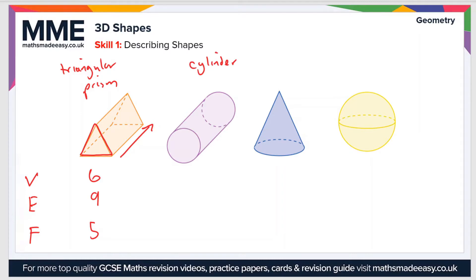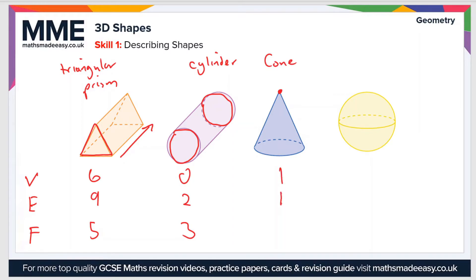Next we have a cylinder — you can think of it as a circular prism. There are no vertices, there are two edges where the front and back faces meet the curved face, and there are three faces. Then we have a cone: there is one vertex at the top and one edge at the base.